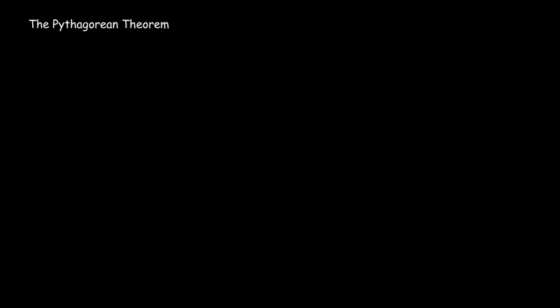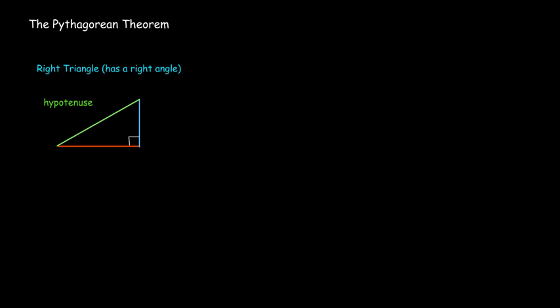Another bit of review we need for the distance formula is the Pythagorean theorem. It applies to right triangles — those are triangles with a right angle, which measures 90 degrees. The longest side we call the hypotenuse; the other two sides are called legs. Normally we call the legs a and b and the hypotenuse c, and we have the formula: a squared plus b squared equals c squared.